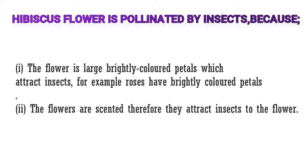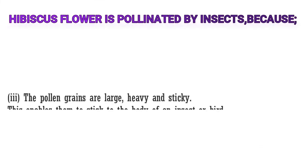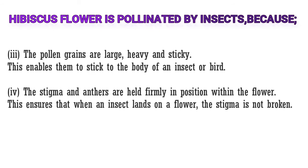Two, the flowers are scented, therefore they attract insects to the flower. Three, the pollen grains are large, heavy, and sticky. This enables them to stick to the body of an insect or bird. Four, the stigma and anthers are held firmly in position within the flower. This ensures that when an insect lands on a flower, the stigma is not broken.